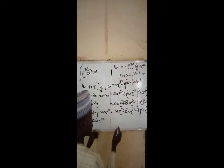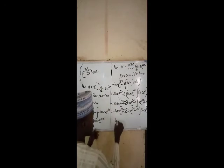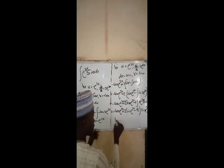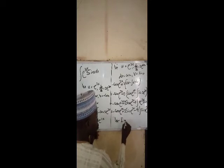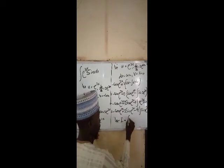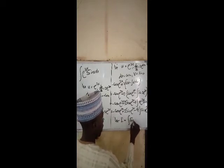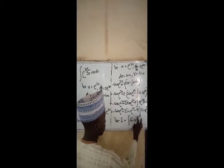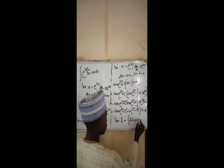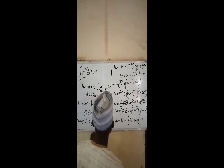Since we come back to the original integral, we also come back to the question. Let I be equal to the integral of sin x times e to the power of 3x.